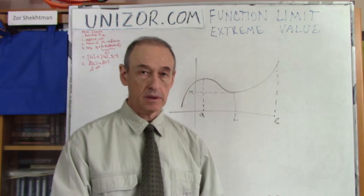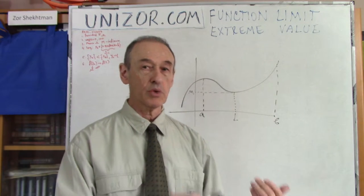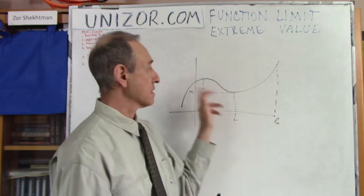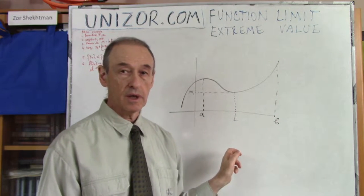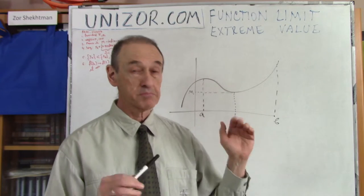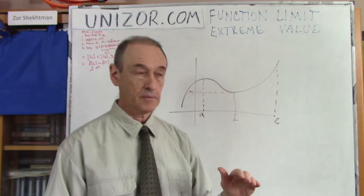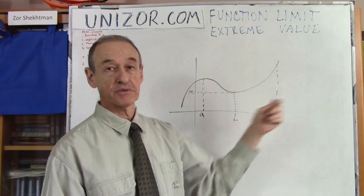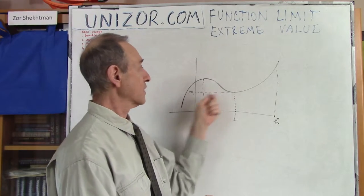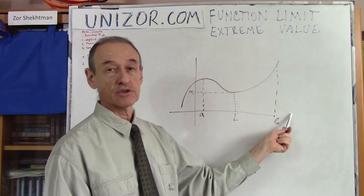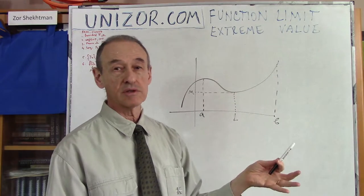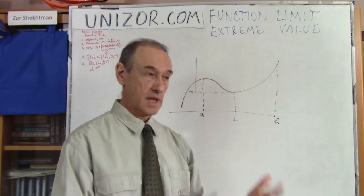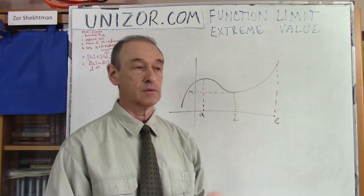In the previous lecture, we were talking about the theorem called the boundedness theorem: that a continuous function defined on a segment is bounded from above and from below. It cannot go to infinity because both ends are fixed and it's continuous. So the endpoints f(A) and f(B) are fixed, and in between you have a continuous curve, which means it cannot go to infinity. We proved this relatively rigorously.